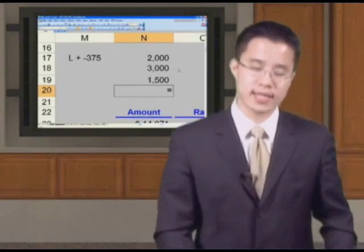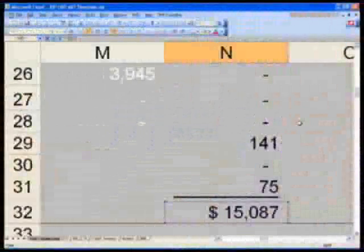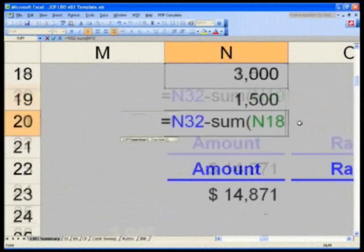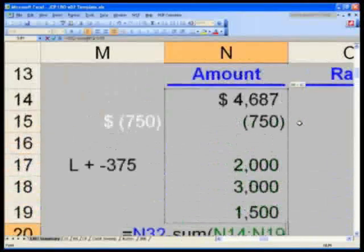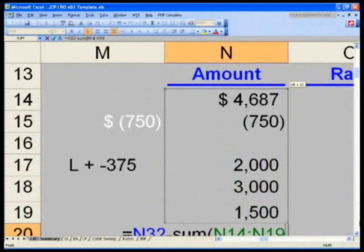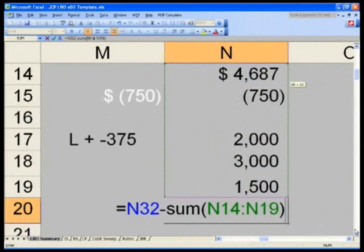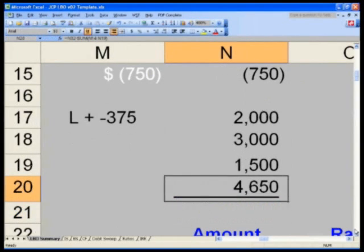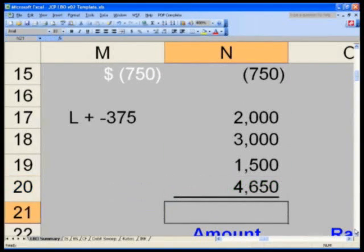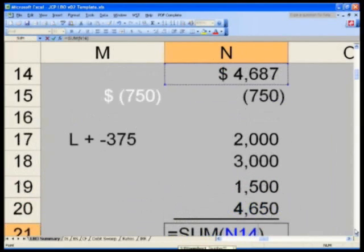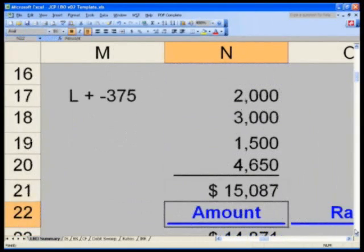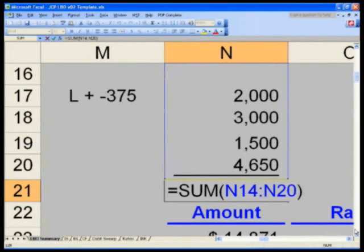This way, in cell N20, we will now say equals N32 minus the sum of everything on top of me, from N14 through N19. Please make sure your formula now matches what I've got here. Now, in N21, I want you to take the summation of everything from N14 through N20. And right now, you'll see that your sources and uses balance, but we didn't plug in our revolver.